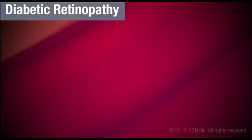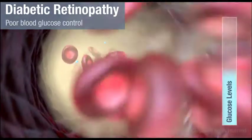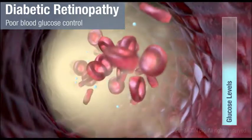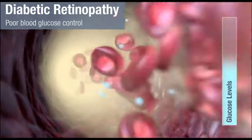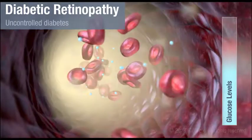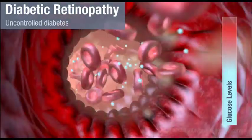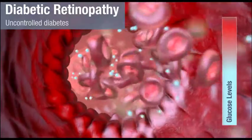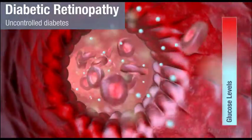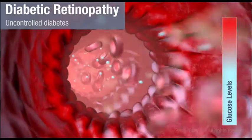Diabetic retinopathy occurs as a result of poor blood glucose control. The longer you have diabetes, the higher the risk of developing diabetic retinopathy. During uncontrolled diabetes, retinal blood vessels become inflamed and damaged. Therefore, strict blood glucose management is very important for eye health in patients with diabetes.